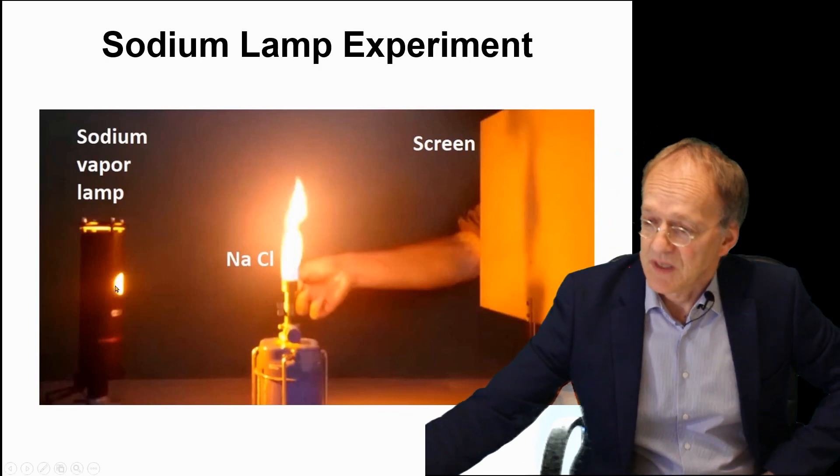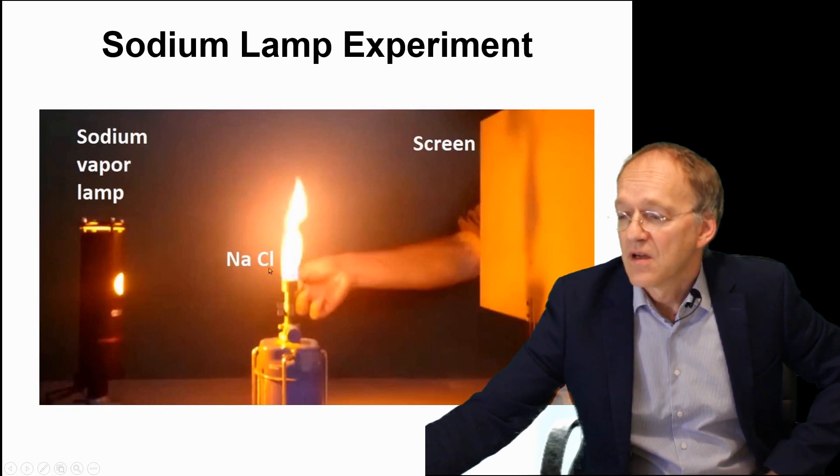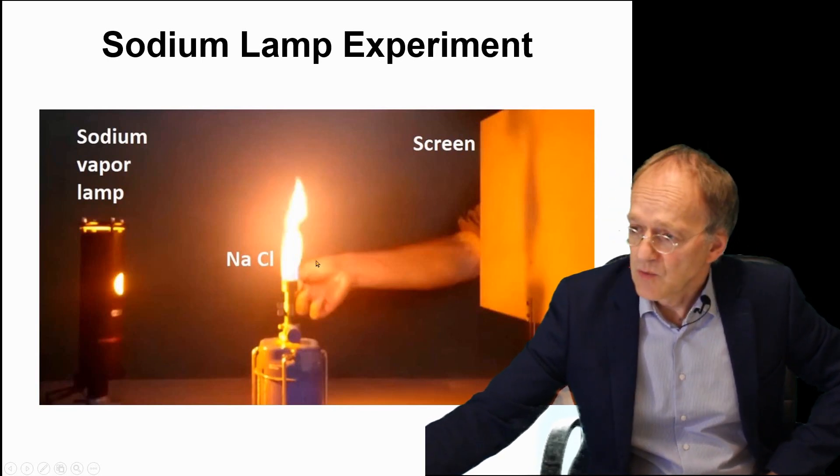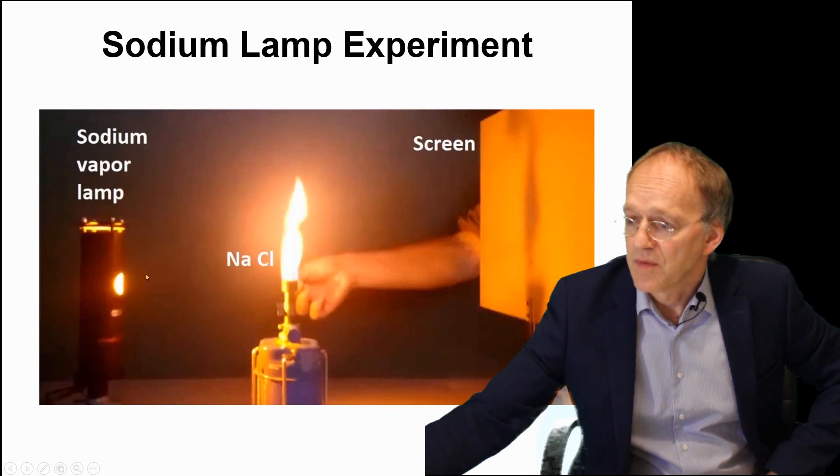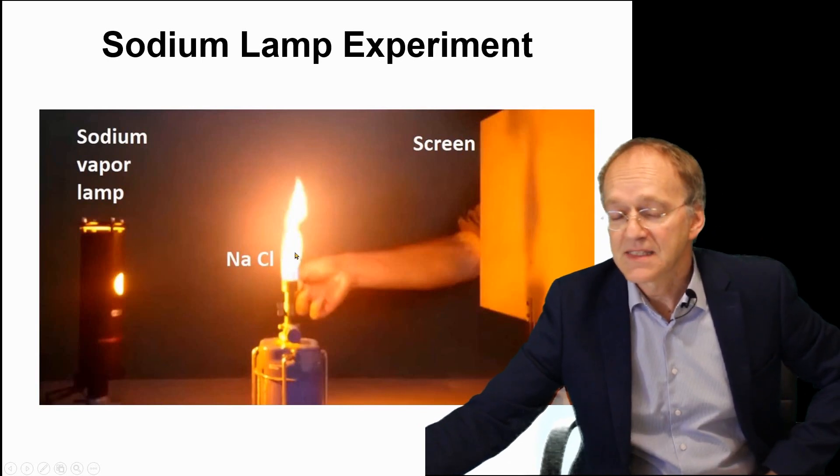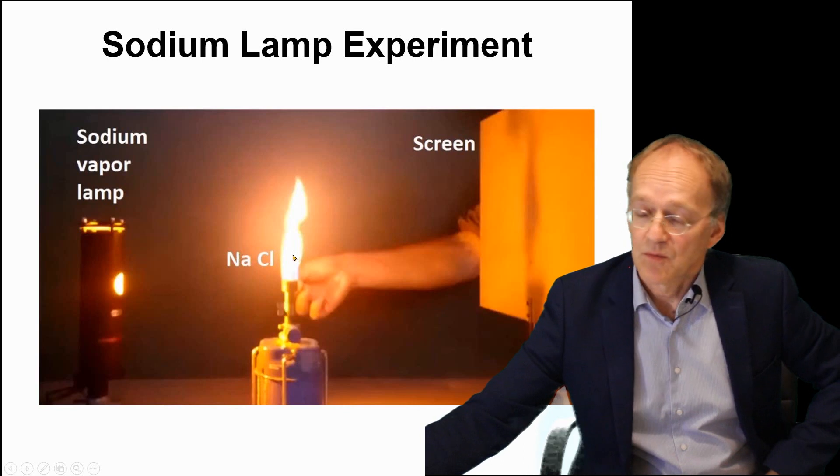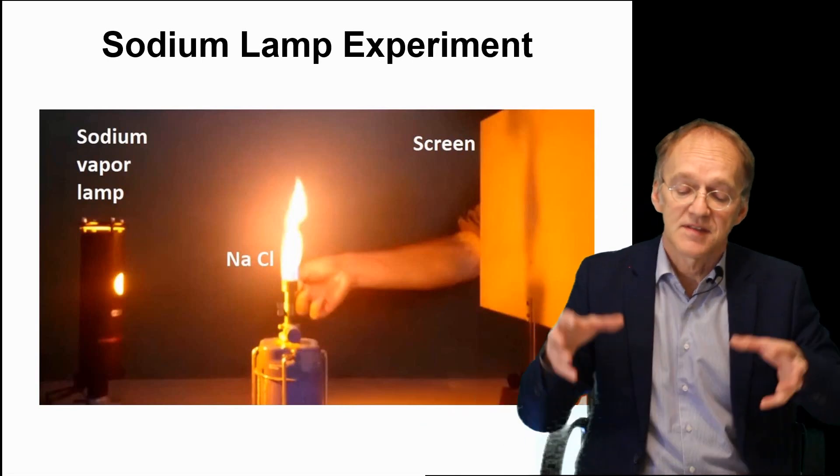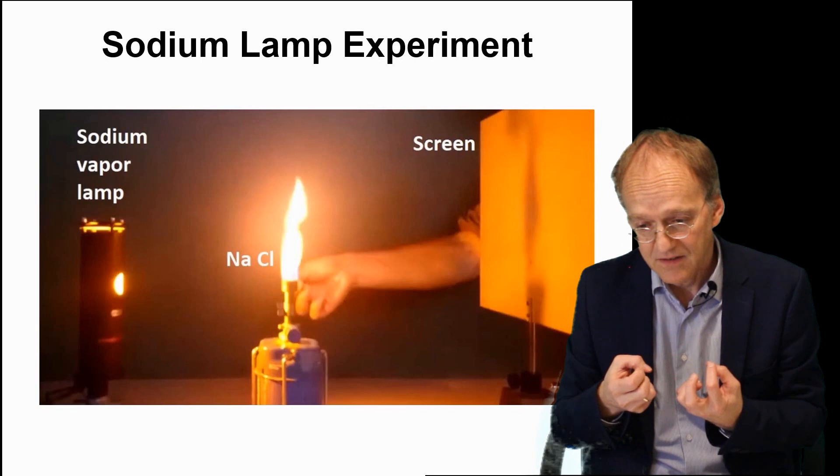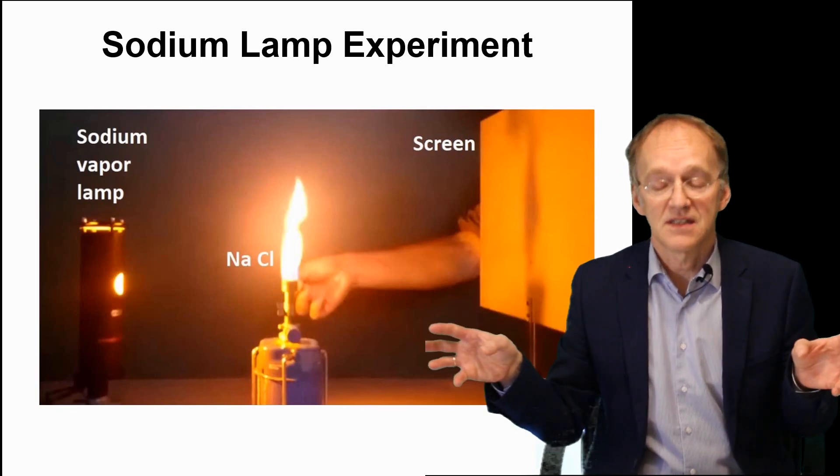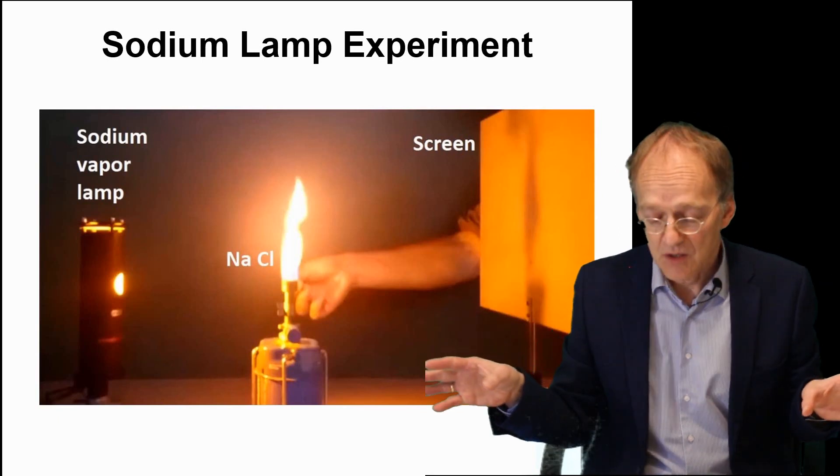Why is that? Because this precisely 589 nanometer light emitted from the lamp hits the sodium atom in the flame. The sodium atom can absorb that light and re-emit it, but in a random direction.